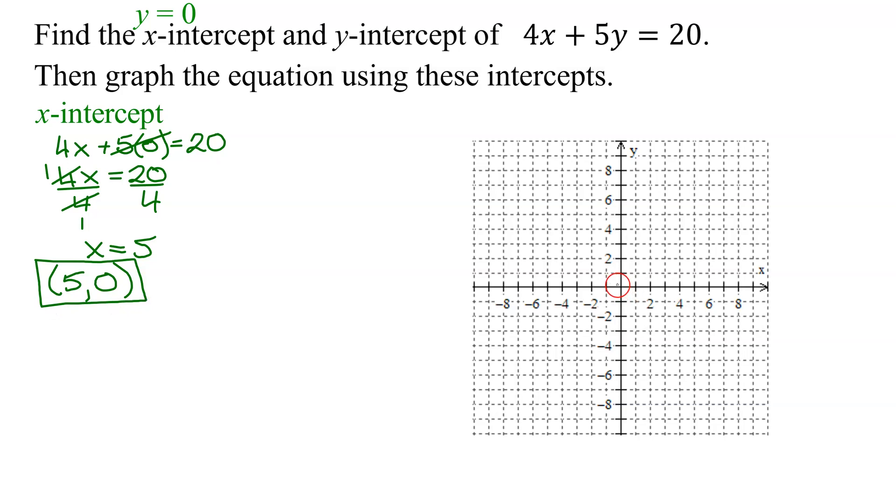And let's plot the point. 5, 0. Start at the origin, go 5 to the right, nowhere in the y direction. So there is my x-intercept.